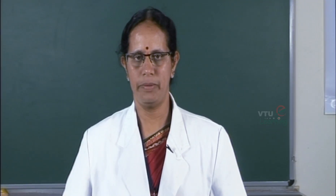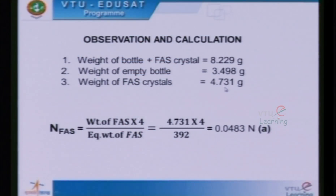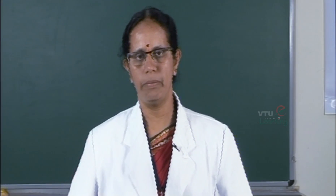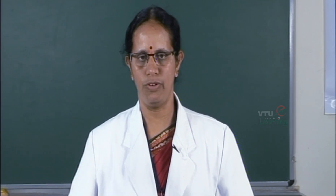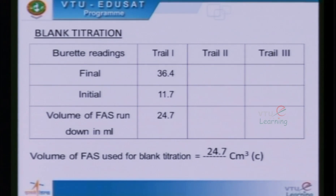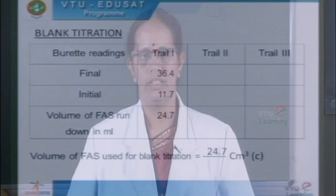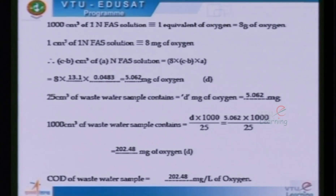Observations and calculations of the experiment: the amount of FAS crystals transferred to prepare the standard solution is 4.731 grams. The normality of FAS solution is 0.0483 N. The volume of FAS used for back titration — that is, the volume of FAS consumed by unreacted potassium dichromate — is 11.6 ml. The blank titration volume is 24.7 ml. The COD of the wastewater sample is found to be 202.48 milligrams per liter of oxygen.